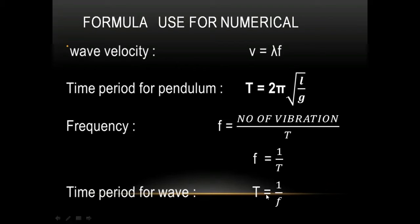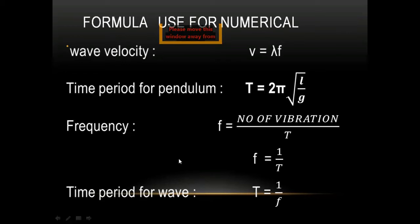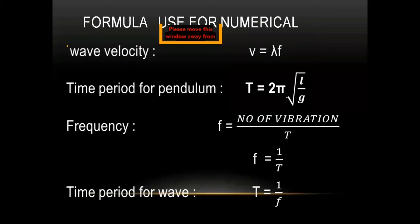The time period of a wave is again the reciprocal of frequency: T = 1/f, where f stands for frequency and T stands for time period. Please take a screenshot of that slide, as it will be helpful for solving numericals since all the formulas are in front of you.